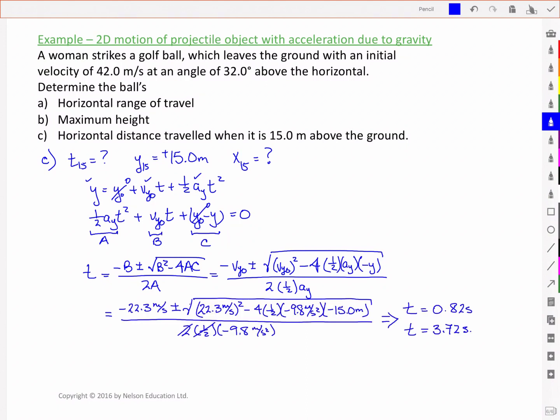So solving I get two values for t. t equal to 0.82 seconds and t equal to 3.72 seconds. My distance then, based on a constant velocity, I will again have two values. Because of those two different times. So I've got 35.6 meters per second times 0.82 seconds. And I've got 35.6 meters per second times 3.72 seconds. And from that I get two values, 29.2 meters and 132 meters. Now both of these answers are valid. They both correspond to times when the y position is 15 meters.